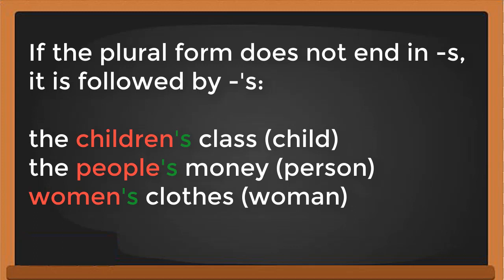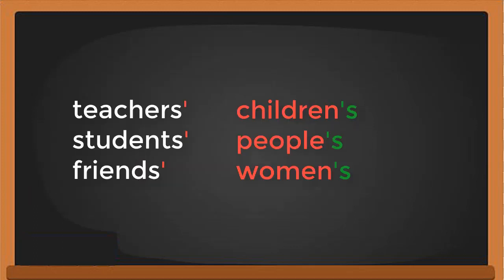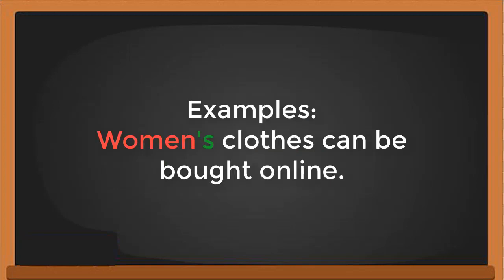It's different when the plural ends in -s, like teachers, students, friends — you just add an apostrophe. But if the plural form doesn't end in -s, you have to add apostrophe-s. For example in conversation: 'Women's clothes can be bought online.'